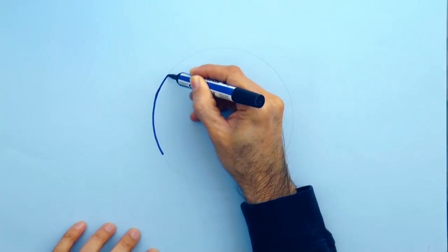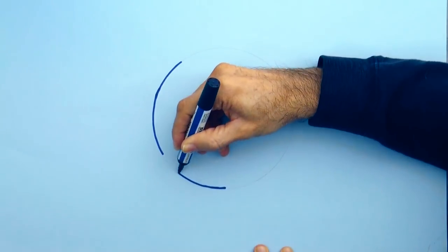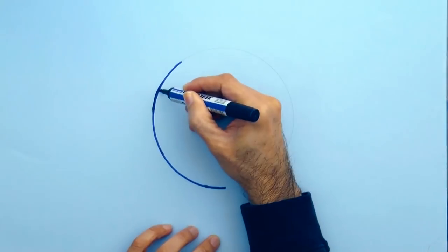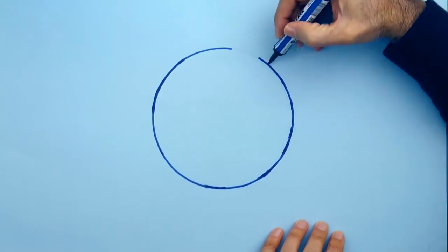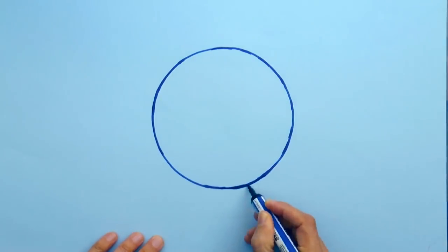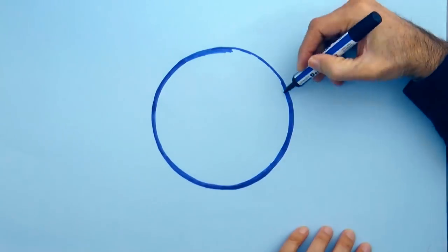And now we go over it with a blue marker, carefully. Like so. Then we widen the line a bit.